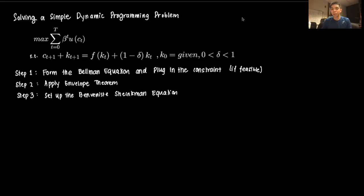Hi everyone and welcome to this video on solving a very simple finite horizon dynamic programming problem. We're going to go through this problem up until deriving the first order conditions and apply the envelope theorem and the Benveniste-Schenkman equation. We're going to go through it pretty slowly and try to see the intricacies of each step and the derivations along the way.